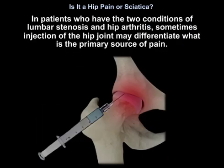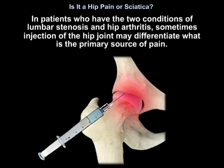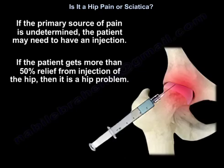In patients who have both conditions — lumbar stenosis and hip arthritis — injection of the hip joint may help differentiate the primary source of pain. If the primary source of pain is undetermined, the patient may need an injection. If the patient gets more than 50% relief from the hip injection, then it is a hip problem.